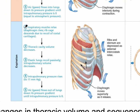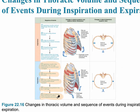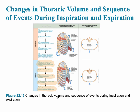During expiration, the inspiratory muscles relax — the diaphragm and the external intercostals — and the thoracic cavity volume decreases. The elastic lungs recoil passively. If there's a problem with the elasticity of the lungs, such as scar tissue, that causes a problem with expiration. When this occurs, the intrapulmonary pressure rises to one millimeter above 760, and the air gases flow out of the lungs down their pressure gradient, and we exhale the air.